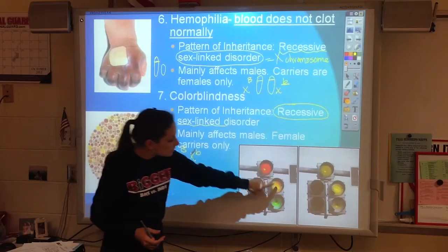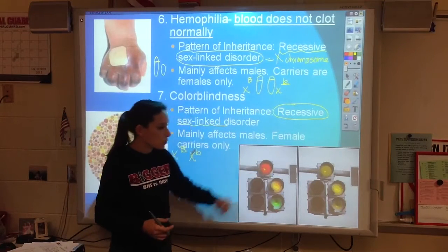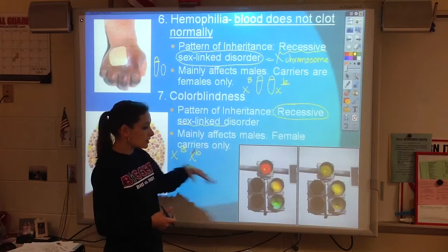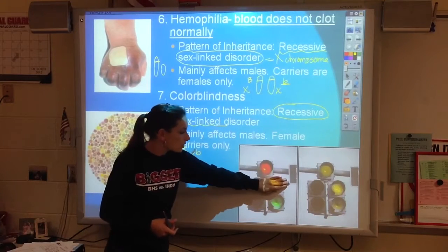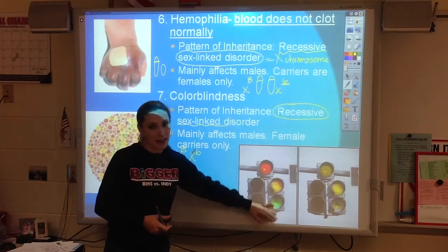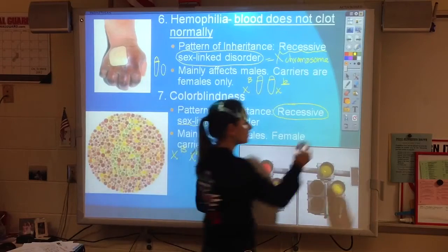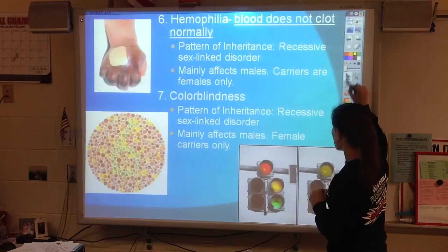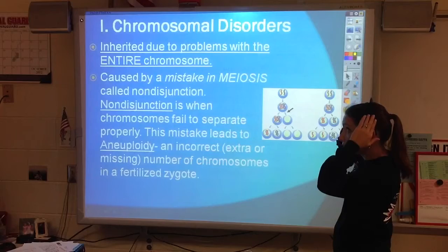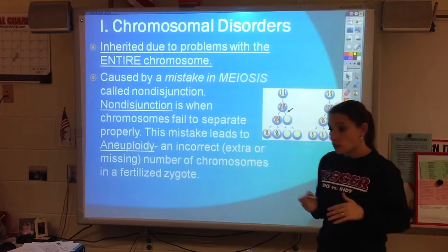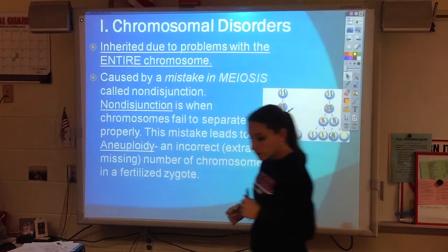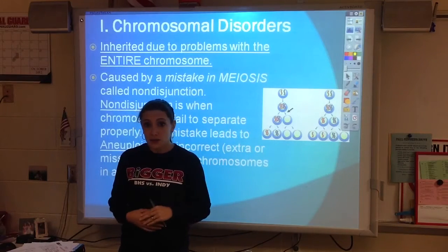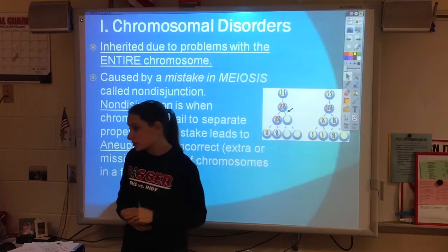Those with red-green colorblindness just can't distinguish between certain colors. They can still drive because they can actually see when each light is lit up. Those are the main genetic diseases — feel free to go back and pause on the slide if you need more time to write.